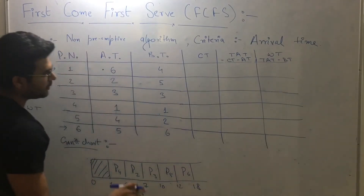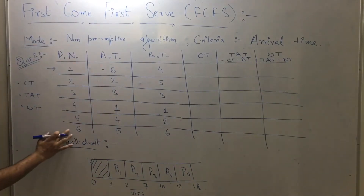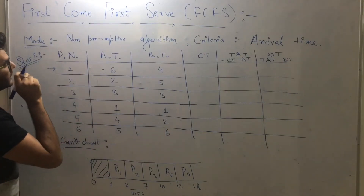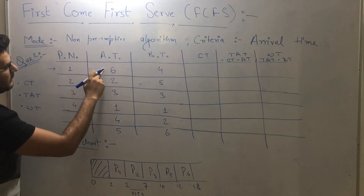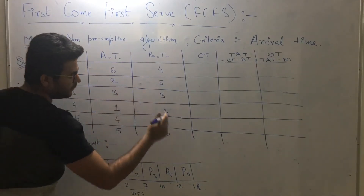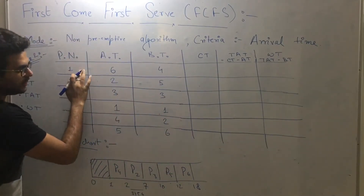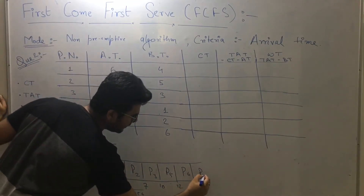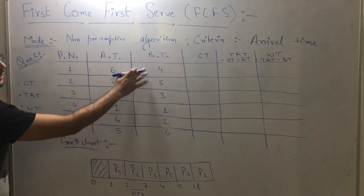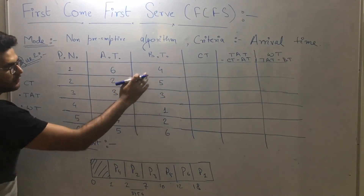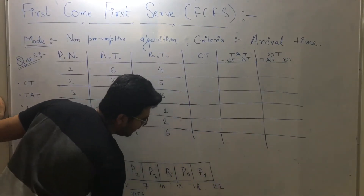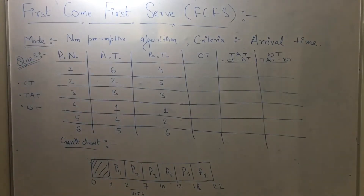Finally, the last process available is process number one, arriving at time six with burst time of four units. We schedule process one for four units, so eighteen plus four equals twenty-two units. This is the complete Gantt chart for this question.